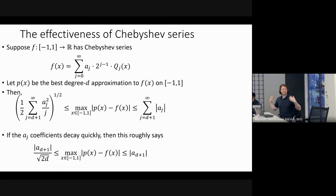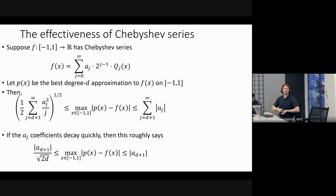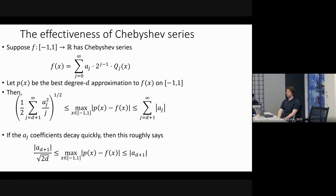One can both upper-bound and lower-bound approximation quality in terms of the Chebyshev series coefficients. If the Chebyshev coefficients decay quickly — which they do for exponential functions — then the best achievable approximation error is close to the (D+1)-th coefficient. For e^(-x), these two bounds are tight enough to give a very precise characterization of what degree is needed. This is a general approach that works for many different kernel functions.